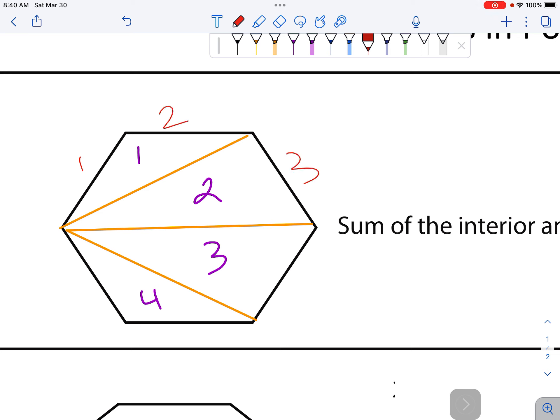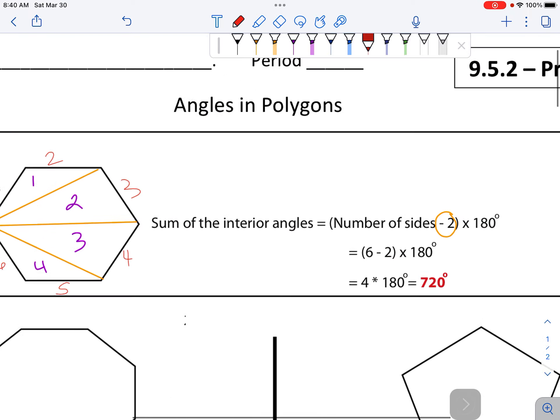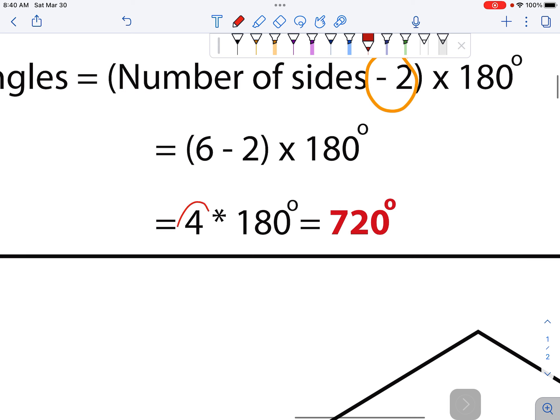1, 2, 3, 4, 5, 6 sides. And if you know how many triangles there are, you can just multiply by 180 degrees. So there are 4 triangles. Each one is 180 degrees, so that's a total of 720 degrees.